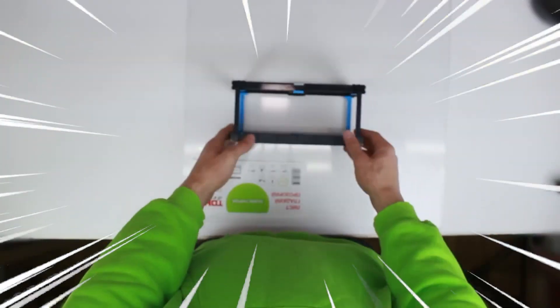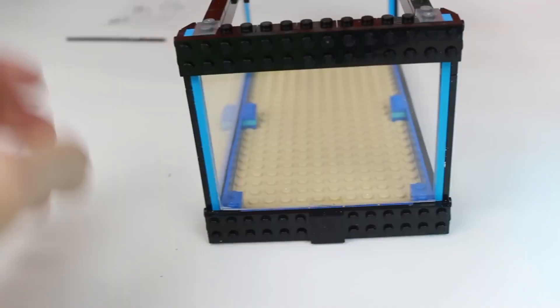Then we need acrylic glass which should be cut to the sides of the aquarium. Ok, let's try on the manufactured glass to the frame. Perfectly.